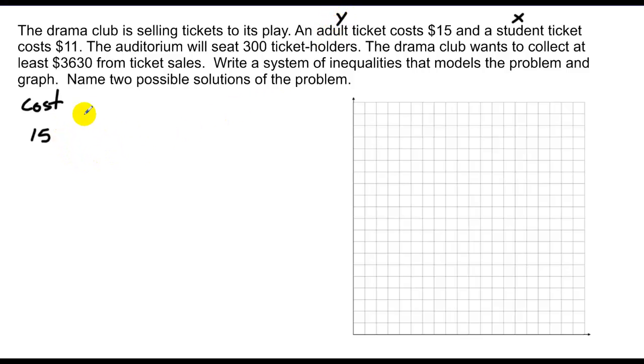Actually, the adult ticket is $15, so that's y. And then the student ticket is $11, call that x. And they have to make at least $3,630, so I have to go less than or equal to $3,630 because that's at least. And I'll change my mind on that again and call that greater than or equal to because I could make more than $3,630.